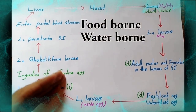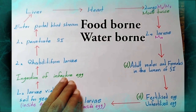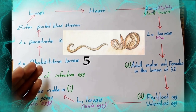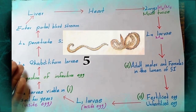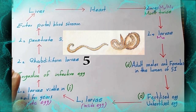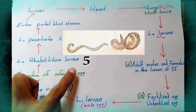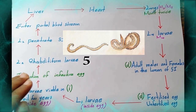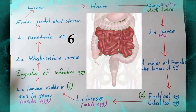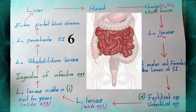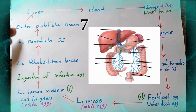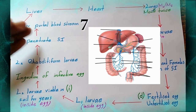Upon ingestion of the infective egg, hatching occurs in the small intestine and the larvae become L2 rhabditiform larvae. L2 larvae are actively motile. Migration through the body begins as L2 penetrates the small intestine.